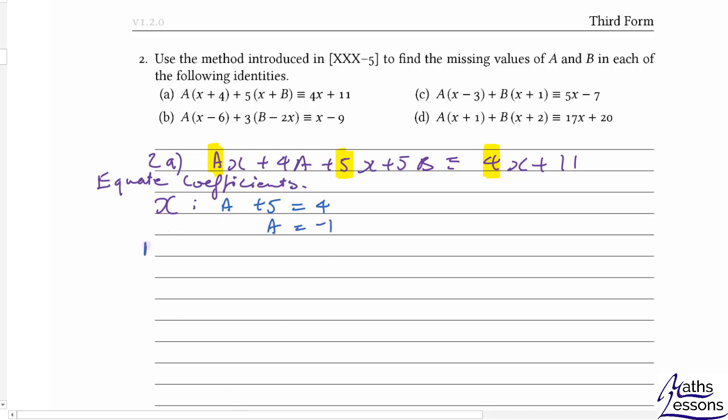If we look at the numbers or constants, we've got 4a, 5b, and 11 - those are all the numbers because a is a number, b is a number, and 11 is a number. So we've got 4a plus 5b equals 11. We know a is minus 1, so minus 4 plus 5b equals 11. Add 4 to both sides, we get 5b equals 15, so b equals 3.